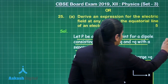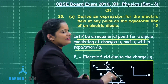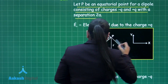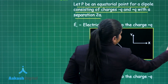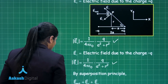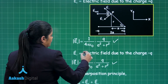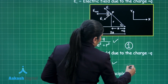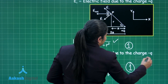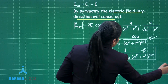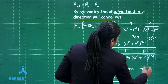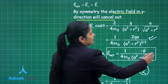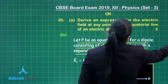You are going to fetch 2 and a half marks for writing this complete derivation. You get 1 mark for calculation of the electric field due to the positive charge, 1 mark for the calculation due to the negative charge, and half a mark for the final result — giving 2 and a half marks for this complete derivation.